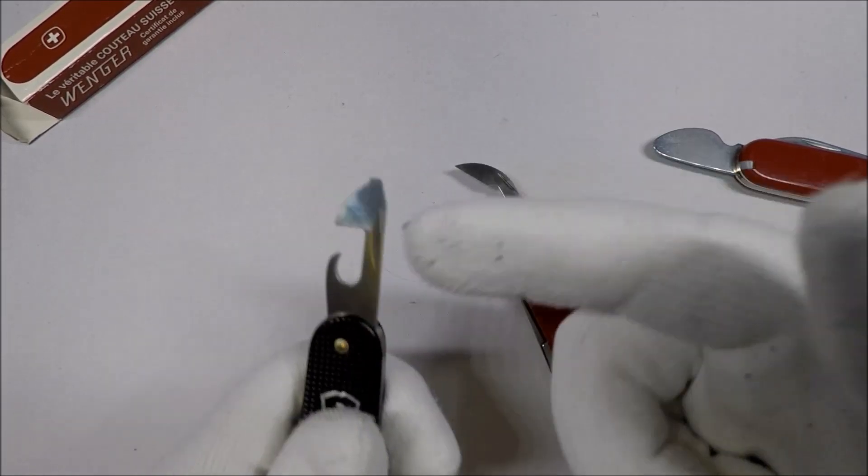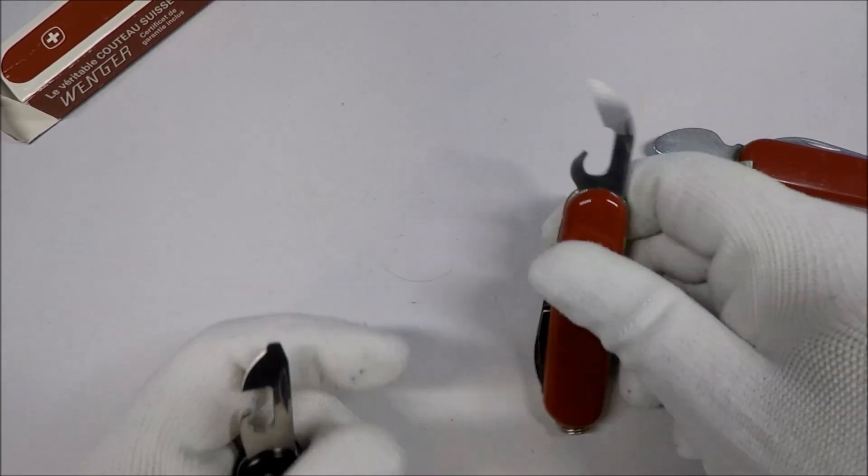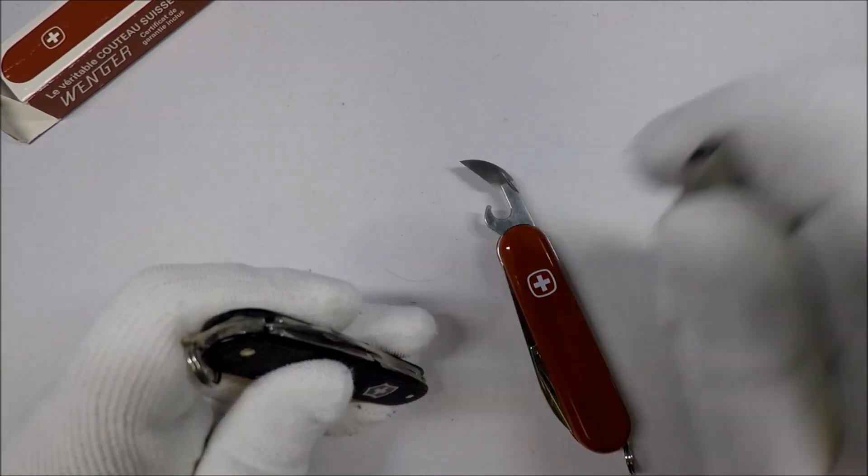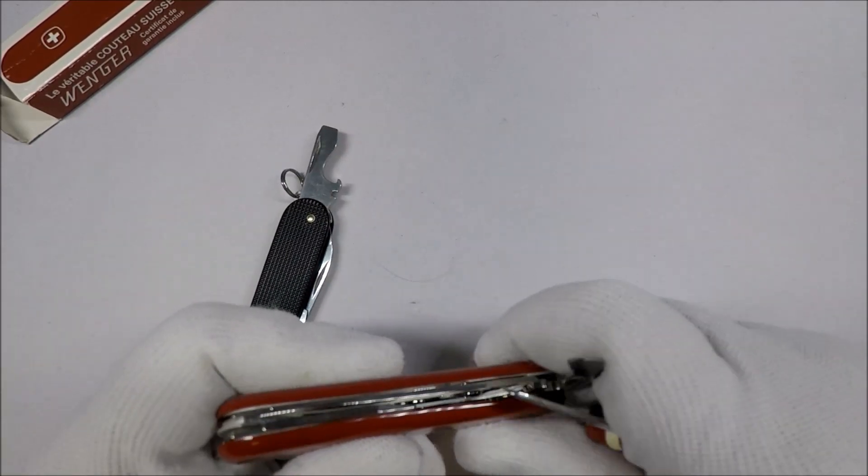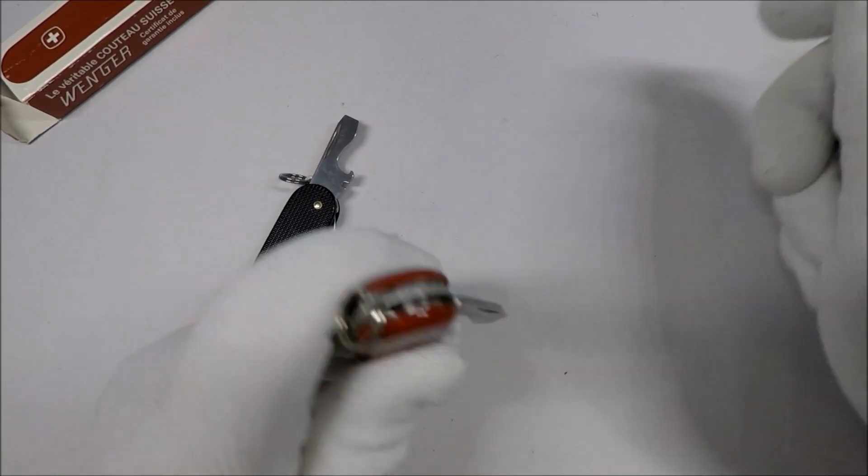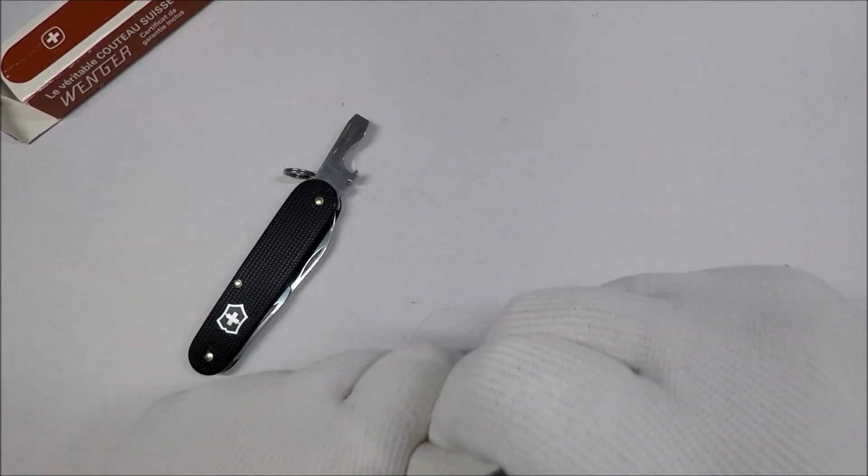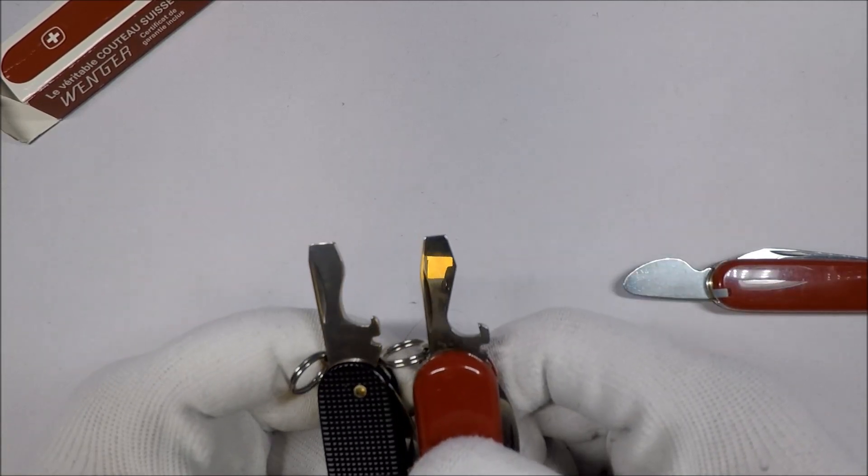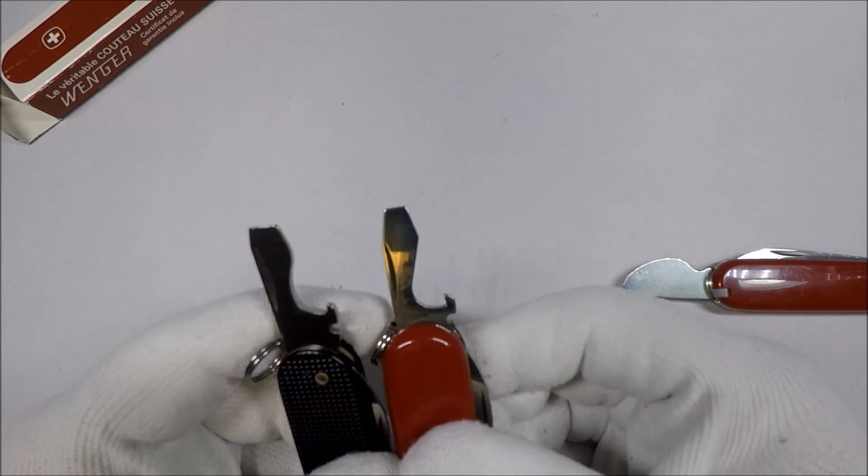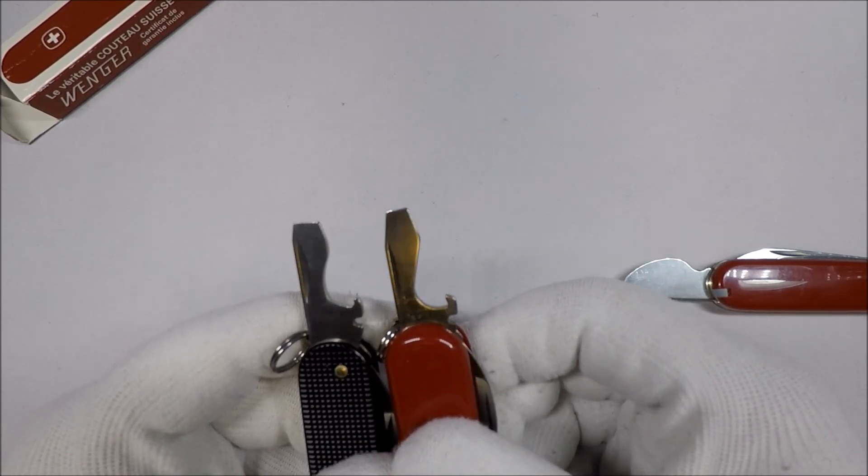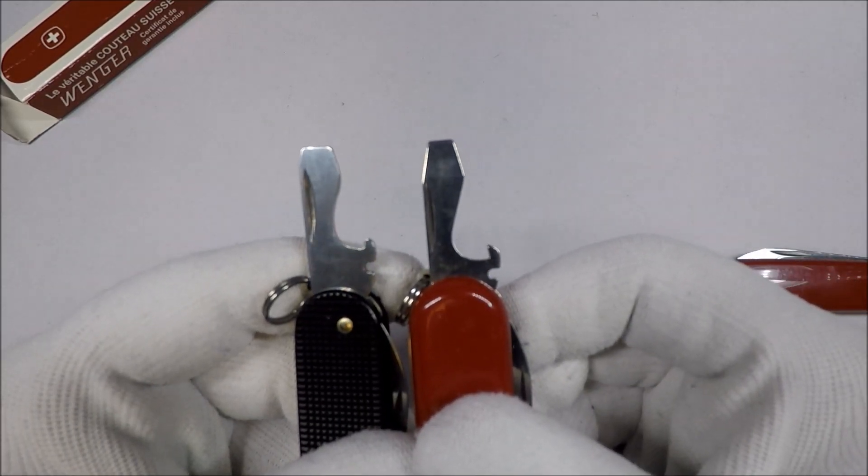Now this one has the flathead screwdriver. No flathead screwdriver here. And then we got the bottle opener. Bottle opener on the Apprentice. So you get a Phillips head screwdriver on each. You've got the oh so useful wire stripper there. And then the bottle opener. It's a little bit different in the shape, but they're pretty similar.